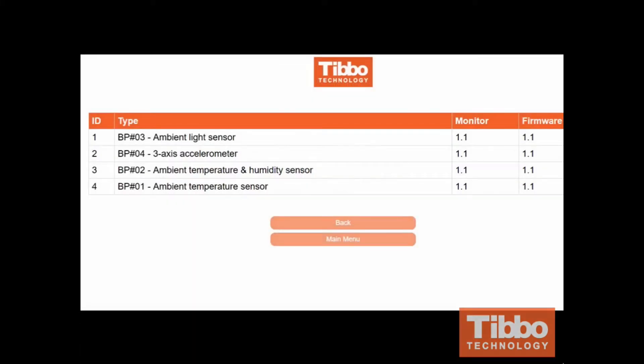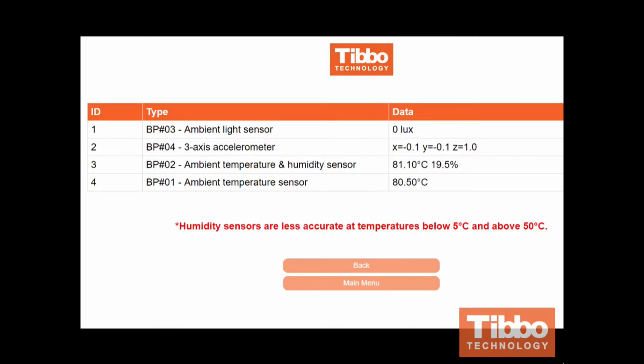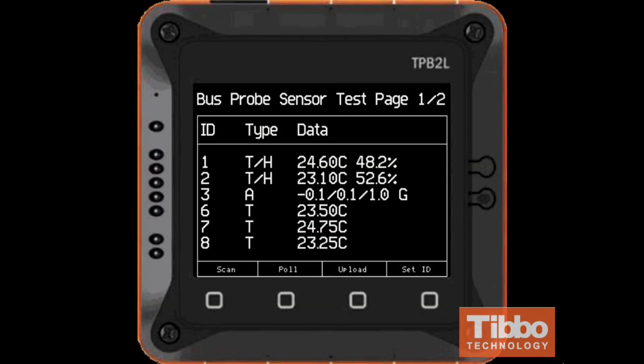After setting up your bus probes, go ahead and check the monitor and firmware versions of each sensor that is online. Now go ahead and monitor your environment from your browser using Tibo's RS-485 Modbus sensors. You can also monitor the readings right from your TPS device, simply by running the BP Tester UI version.